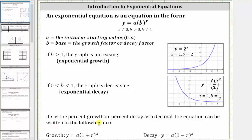If r is the percent growth or percent decay as a decimal, the equation can be written in one of the following forms. If we have exponential growth, the base b is equal to one plus r, where r is the percent growth as a decimal. And if we have exponential decay, the base b is equal to one minus r, where r is the percent decay as a decimal. Let's look at some examples.